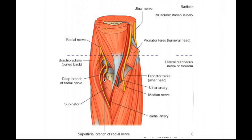Now for the superficial branch. Here's our superficial branch of the radial nerve. When we're looking at this nerve, it's definitely under some muscles — it's not just underneath the skin, but it is superficial relative to the deep branch of the radial nerve. It's going to course under some muscles, in particular brachioradialis. In this picture, they've peeled this part back not only so you can see the bifurcation and the deep branch, but also because the superficial branch is running right underneath the brachioradialis.